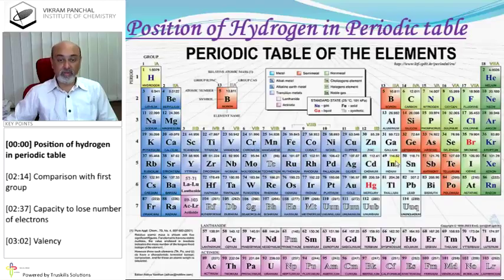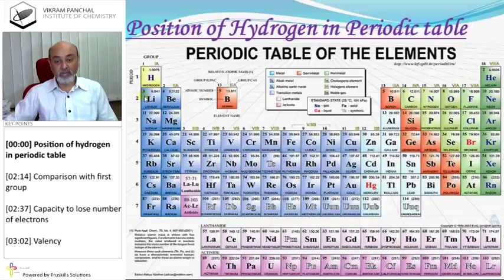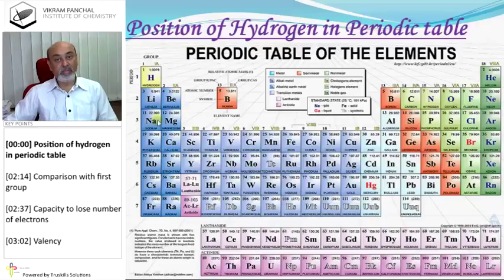There are seven orbits, so there are seven periods. If an element is in the first period, that means there is only one orbit. If an element is in the second period, there must be two orbits. If an element belongs to the third period, then there are three orbits and the outermost shell will be the third.